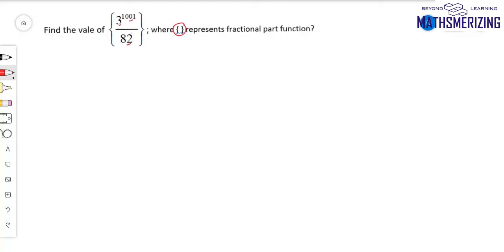We need to find divisibility with 82, and we know that 3 to the power 4 is 81, which is close to 82. So I can write it as 82 minus 1.